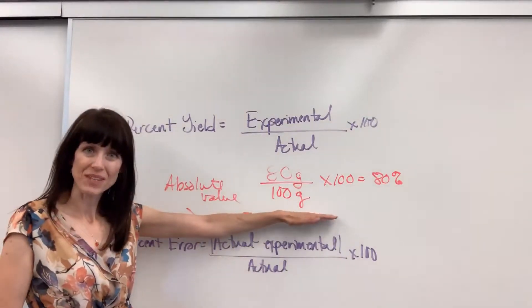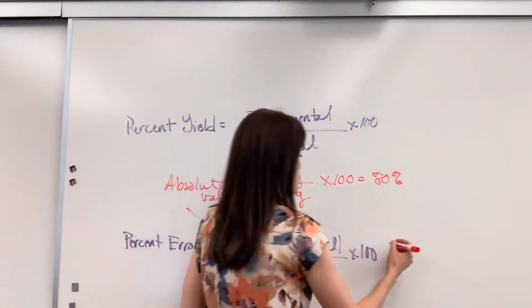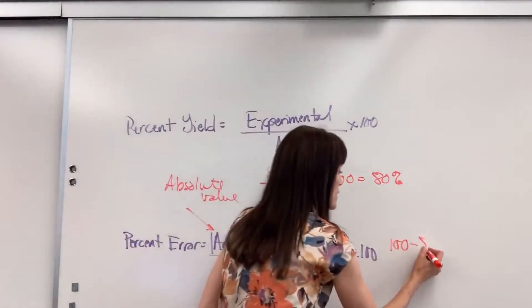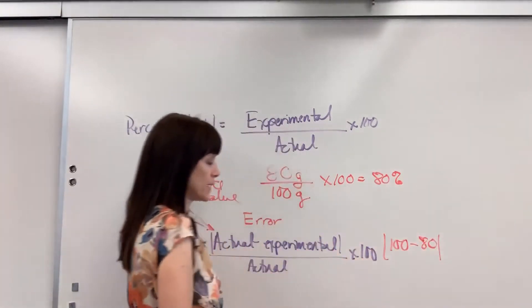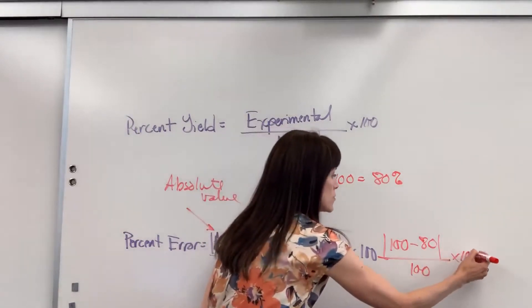Let's use this same example right here. If the actual value was 100 minus the experimental value, we collected 80 grams of magnesium sulfate, put that in absolute value, divided by the actual, times 100.